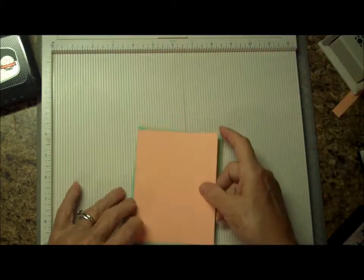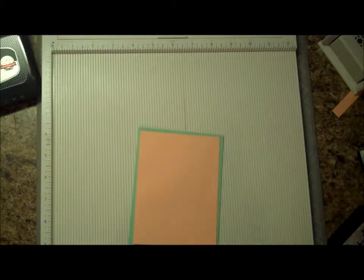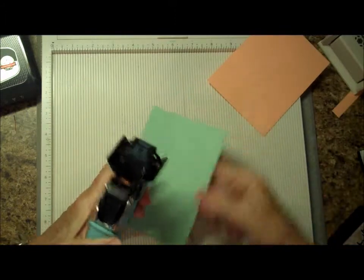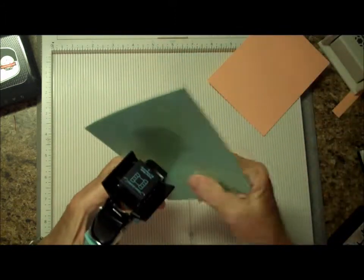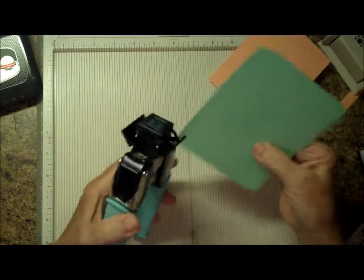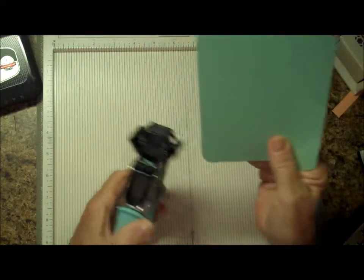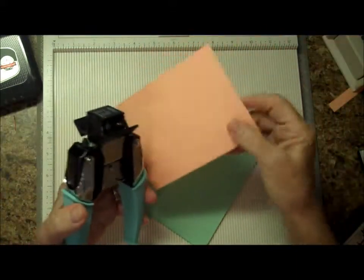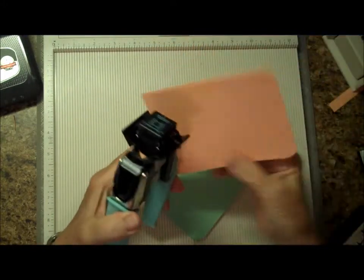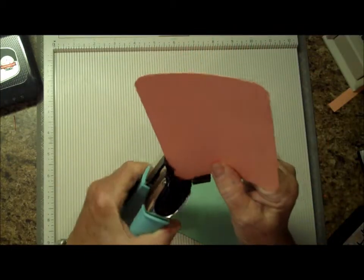The next piece is 5.25 by 4, and I'm going to use my corner chomper and chomp the corners. And we'll do the same with the orange.